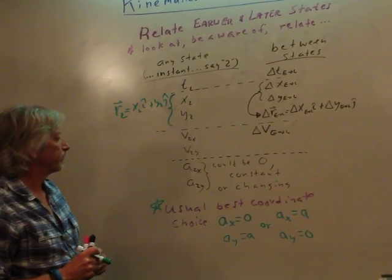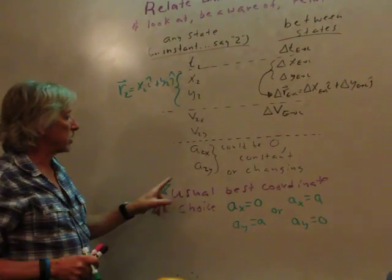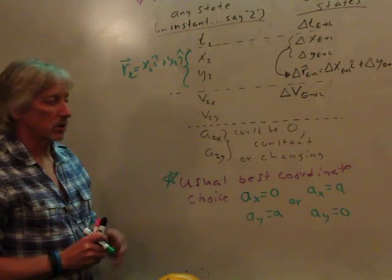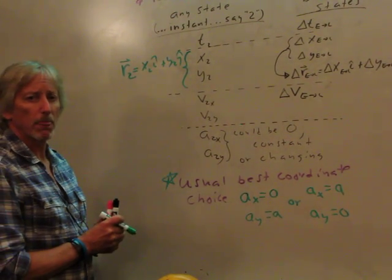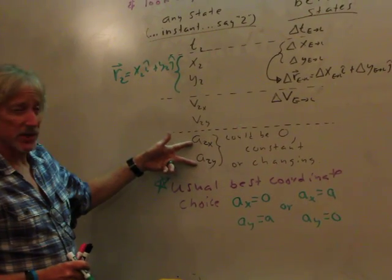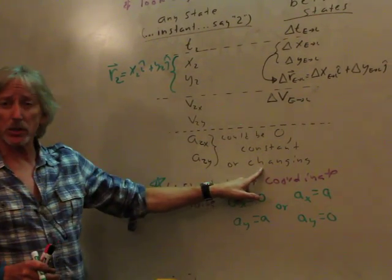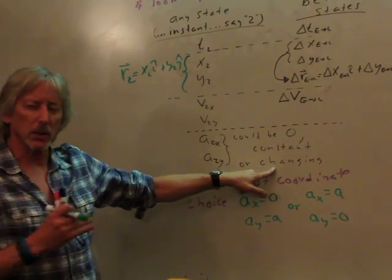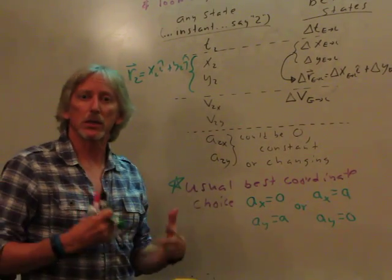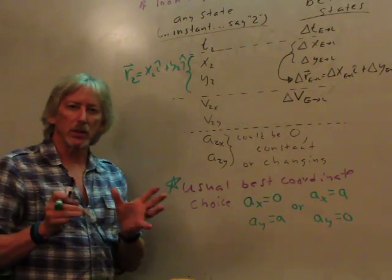Change in velocity. Acceleration at state two in the X direction. Acceleration at state two in the Y direction. The components of the acceleration. Okay. Oftentimes, you know, we can have zero acceleration, constant acceleration. But we can have a changing acceleration. We'll have to keep track of it. Then the acceleration at different instances would be different. Don't worry about it too much. We need to look at specifics.